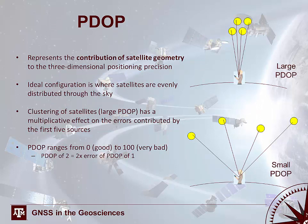PDOP specifically represents the contributions of satellite geometry to three-dimensional positioning precision, incorporating both the horizontal and vertical components. The ideal configuration for PDOP is when satellites are evenly distributed across the sky. In the diagram, the bottom case with a small PDOP shows evenly distributed satellites — the ideal case. The top case shows clustered satellites, meaning a high degree of overlap in the position uncertainty spheres, resulting in large dilution of precision — a case where you'd try to avoid doing a survey.